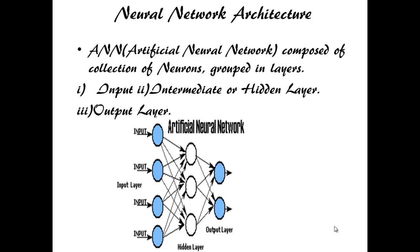Next we will see Neural Network architecture. Artificial Neural Network is composed of collection of neurons grouped in layers. It has three layers: input layer, intermediate or hidden layer, then the output layer.